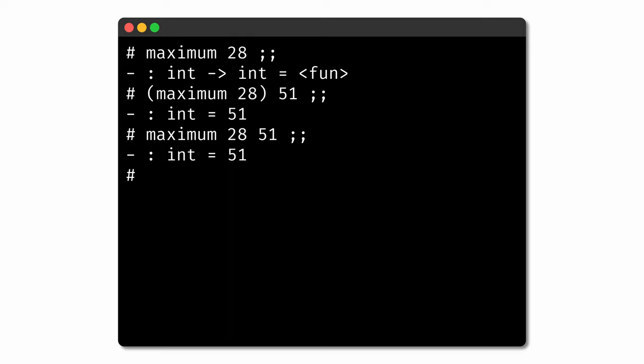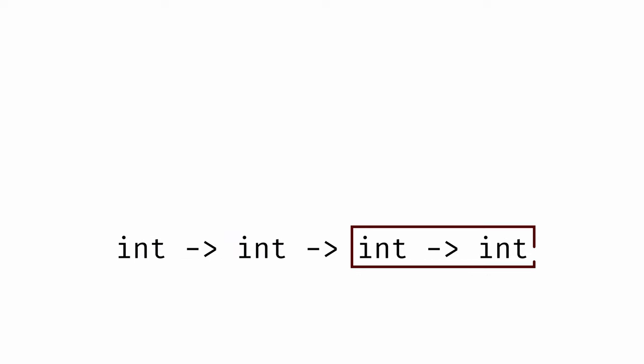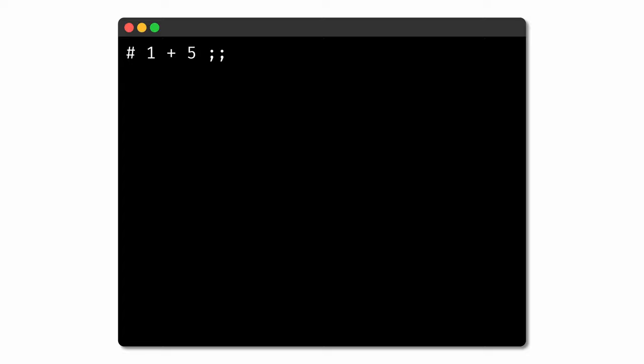There's no reason we need to stop at two arguments. We could write functions that take as many arguments as we'd like, one at a time. Here's an example for the type of a function that takes one integer input and returns a new function that takes a second integer input, which returns a new function that takes a third integer input and then returns an integer as output. We've actually already seen functions that work in this curried fashion. Let's go back to the operators we used when first working with values and types. The addition operator, for example, adds two integers together and produces a third integer.